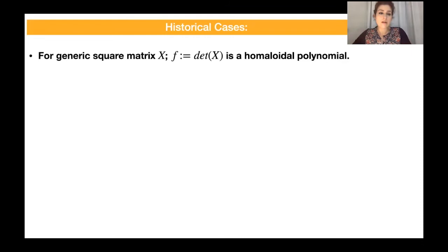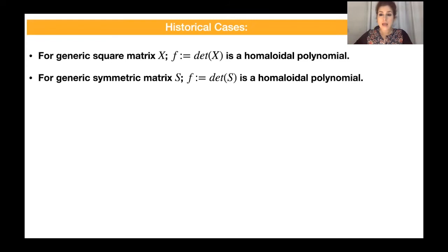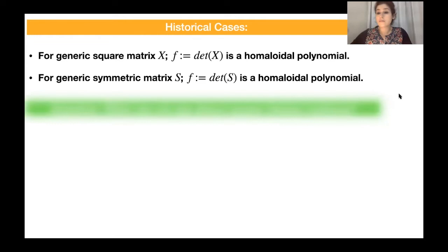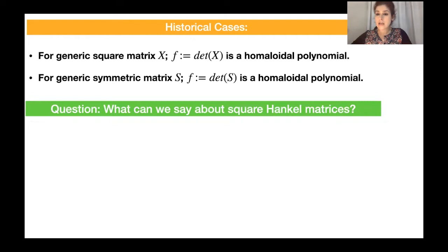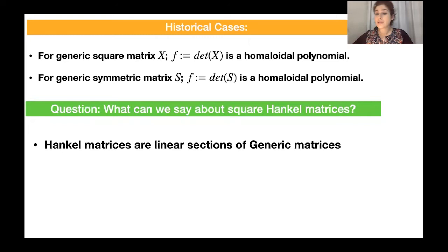Historical cases that were known: if you consider the determinant of a generic square matrix, this polynomial is homoloidal. If you consider a generic symmetric matrix and take f as its determinant, this polynomial is also homoloidal. The next question that naturally arose for us was: answer this question for the square Hankel matrices. Hankel matrices are classical matrices — maybe not as well-known as the generic matrix and symmetric matrix — but they have many interesting properties.